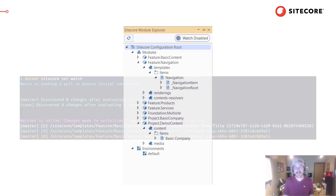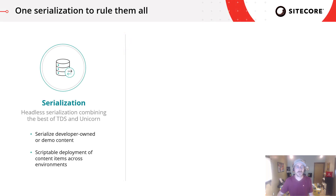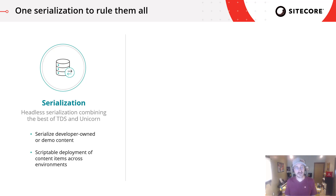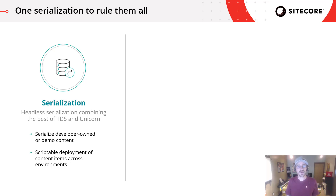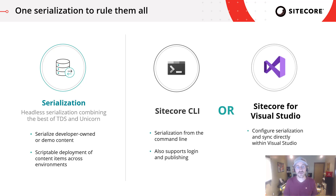And don't worry if you're not a fan of the command line — we still have you covered. We think this new tool combines the best of TDS and Unicorn, but we also wanted something that worked more easily with containers, integrated Sitecore's identity system, and was really built for automation. Sitecore Content Serialization was built from the start for your continuous integration and deployment pipelines. But we also wanted something that appealed to two different types of developers: those who prefer the CLI and scripting, and those who prefer working in a GUI, and we wanted them to be able to work together on the same team.